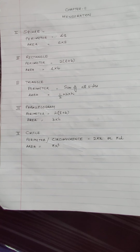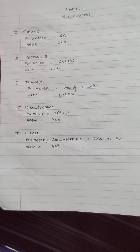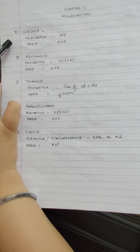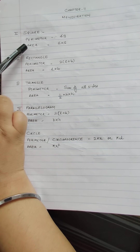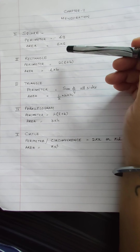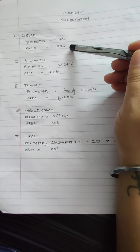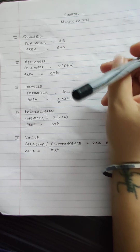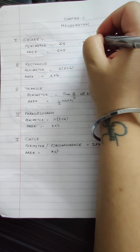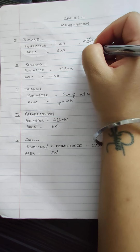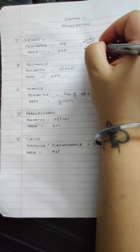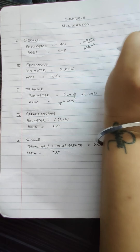This is a formula-based chapter. So first, square: perimeter is 4 into side, and area is side into side. Perimeter unit is meter or centimeter depending on the question, and area is meter square or centimeter square.